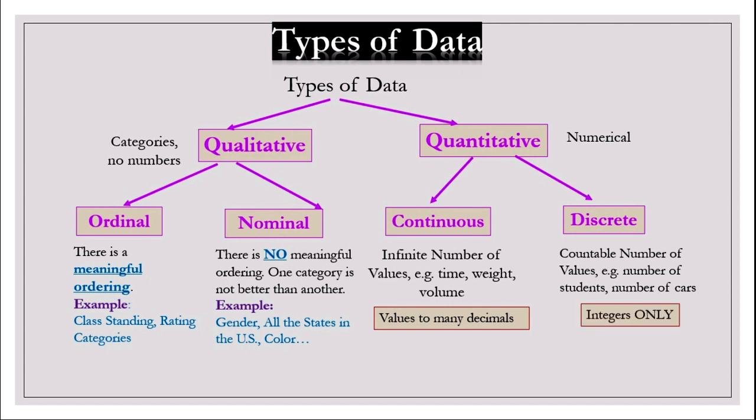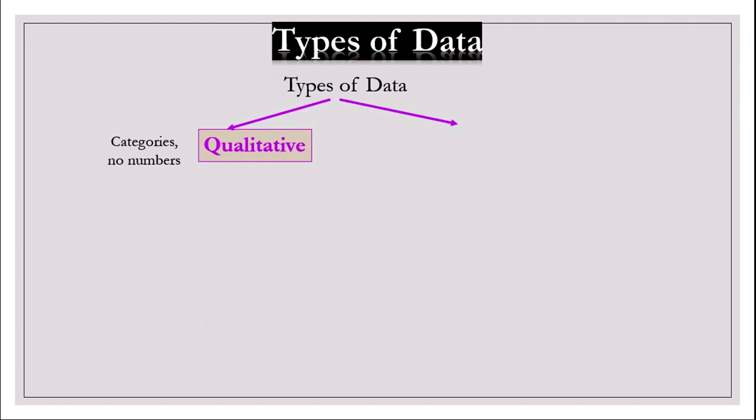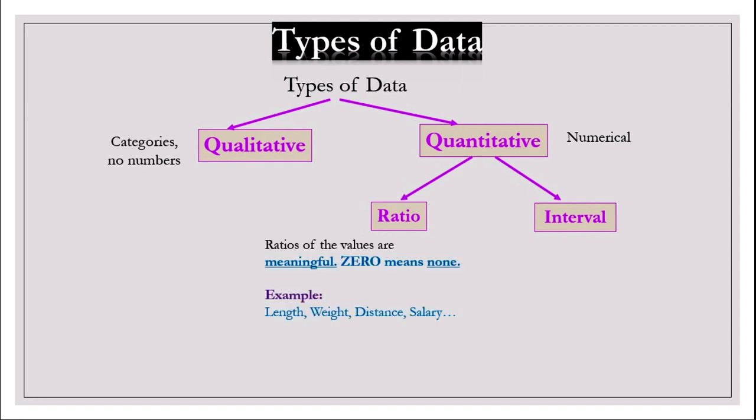For quantitative data, there is another method to classify: ratio and interval. What's the difference between them? For ratio data, ratios of the values are meaningful. Zero means none. For example, length, weight, distance, and salary.